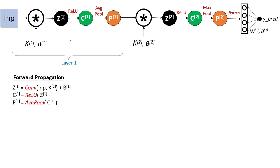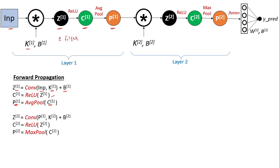Let's first see how our CNN architecture looks. In the first layer we take the input image and convolve it with filter K — I'm assuming only one filter for simplicity, though in a normal CNN many filters are used. After convolving with filter K1 we add bias B to get Z1, then apply ReLU to obtain C1, then perform average pooling to get P1. In the second layer we take P1, convolve with filter K2, add bias B to get Z2, then apply ReLU.